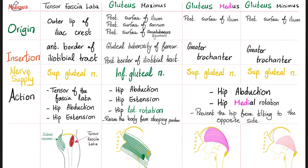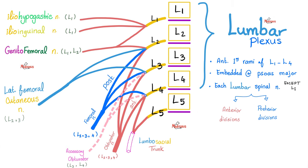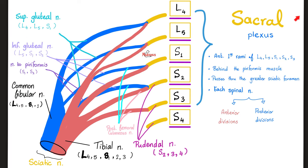Why do you get Trendelenburg gait? Because you injured your superior gluteal nerve. Your lumbar plexus gives you femoral nerve, obturator nerve, iliohypogastric, ilioinguinal, genitofemoral, and lateral femoral cutaneous nerve. Your sacral plexus gives you the sciatic nerve, the pudendal nerve, superior gluteal nerve, inferior gluteal nerve, nerve to piriformis, and others.